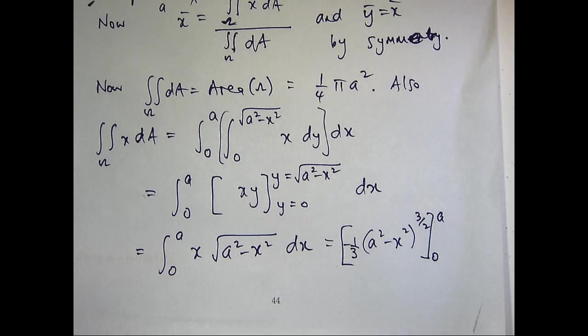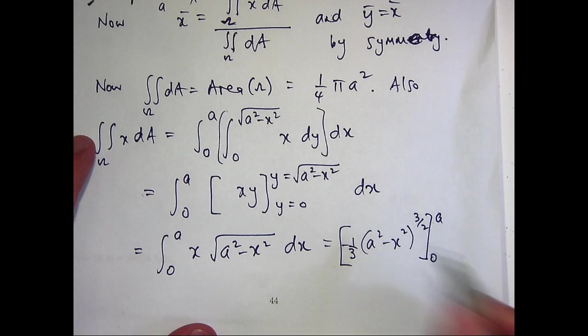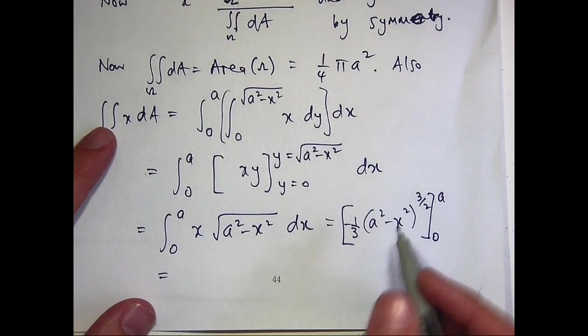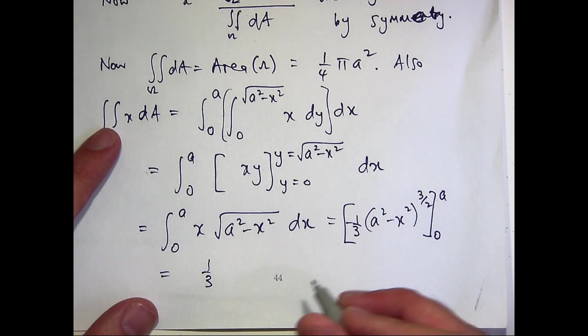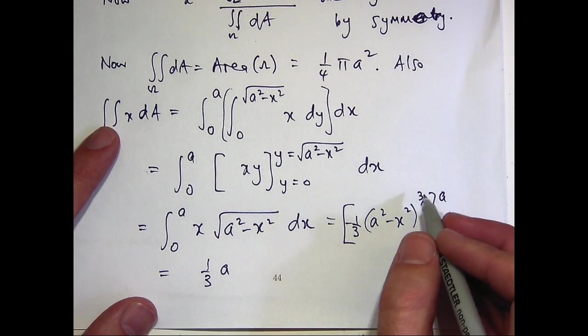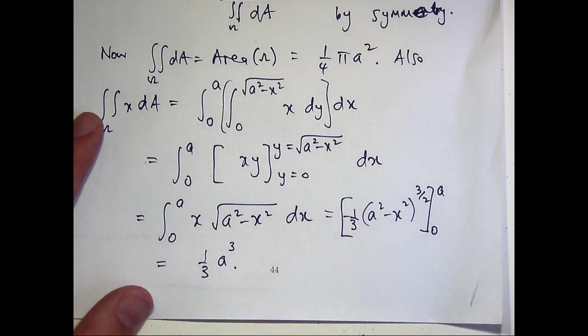Okay, so if you sub in now for x equals a and x equals 0, well, the first term's going to give you 0. And the second term is just going to give you something like 1 third a squared to the power 3 on 2, which is just 1 third a cubed.